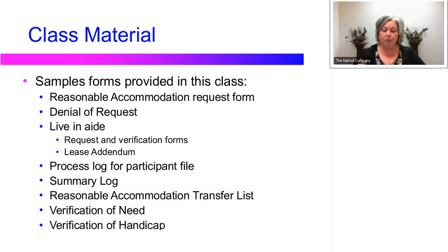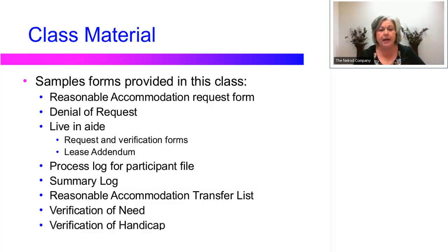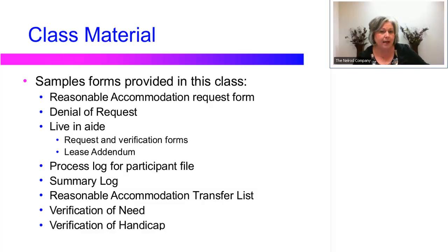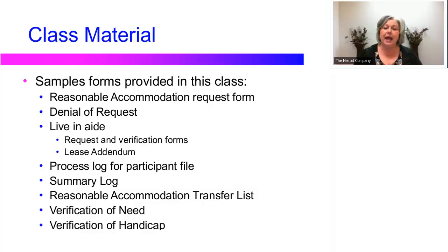Class materials that are provided and can be downloaded include the reasonable accommodation request form. Even though we provide a form for requesting reasonable accommodations or modifications, and your policy may state that the request has to be in writing, the courts have upheld that the request does not have to be in writing. Once that request is out there, even if it is just provided directly to a maintenance person, it's there and you have to take action. So you will need to start the tracking process by filling out the form yourself and noting that the request was made orally, to whom, and when.